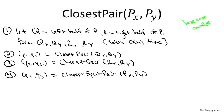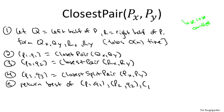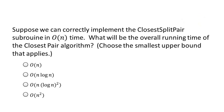If we have a correct implementation of closest split pair — taking as input the original point set sorted by x and y coordinate and returning the smallest split pair — then the overall algorithm is correct. The closest pair must either lie on the left, on the right, or be split. Steps handling each category compute the closest pair in each case, and we return the best of the three. So a correct implementation of closest split pair implies a correct implementation of closest pair overall.